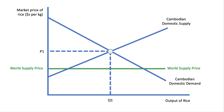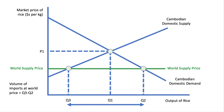If you allow free trade, Cambodian consumers will expand their demand up to Q2 — they can now buy rice at a cheaper price from overseas. Cambodian growers will not be able to compete as much at that price, assuming a homogenous product and that they're price takers in the market. They'll be able to supply only quantity Q3 at the world supply price. The result is that the volume of imports will be Q3 to Q2 — domestic demand exceeds the ability of Cambodian rice farmers to supply the totality of domestic demand.